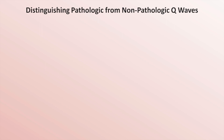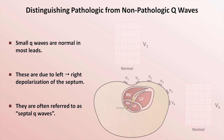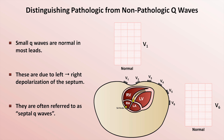I'll first talk about Q-waves, starting with an explanation as to why small, non-pathologic Q-waves are often seen in most leads. They are due to a left-to-right depolarization of the septum and thus are often referred to as septal Q-waves. We can illustrate these septal Q-waves with a schematic of an axial cross-section of the heart and examination of leads V1 and V6.